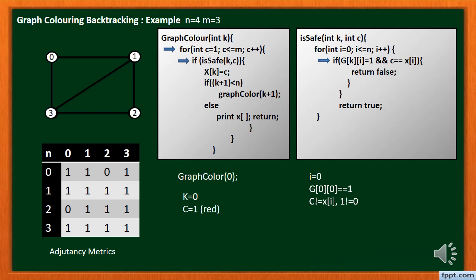In this problem this condition is not satisfied. The loop continues for all n and at the end of the loop it returns true, which means this color is safe for node 0. Then give this color to node 0, that is we give red color to node 0.